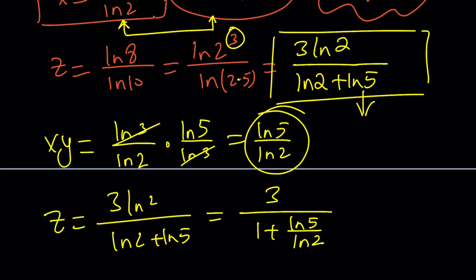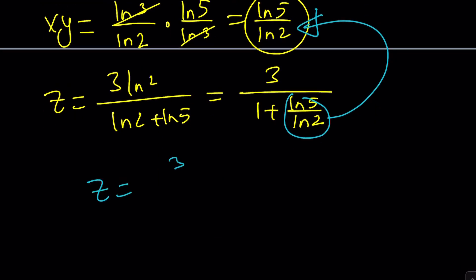Now, ln 5 over ln 2 will be replaced with xy. So, z will be 3 over 1 plus xy. And this brings us to the end of this video.